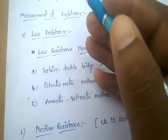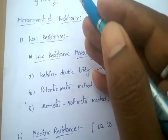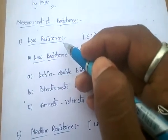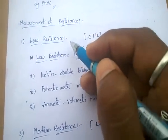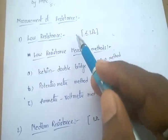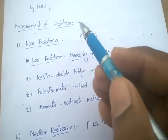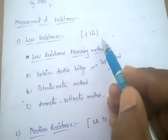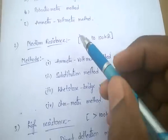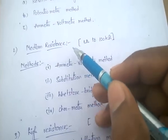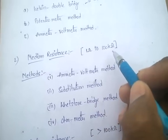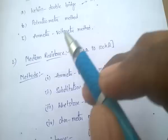Resistance may be classified as three types: first one is low resistance, second is medium resistance, and third is high resistance. Low resistance is the resistance value which is less than or equal to 1 Ohm. Medium resistance is the resistance value from 1 Ohm to 100 Kilo Ohms.